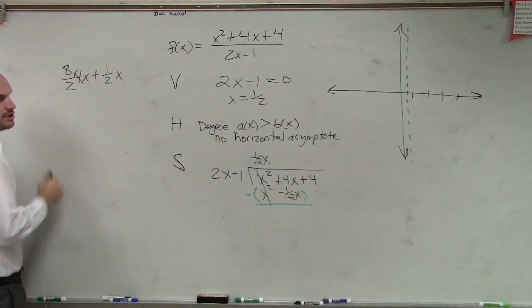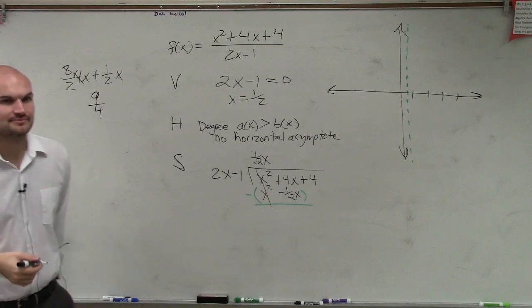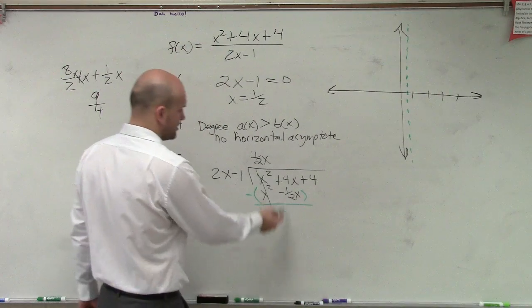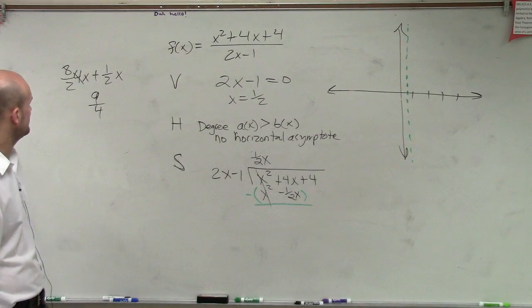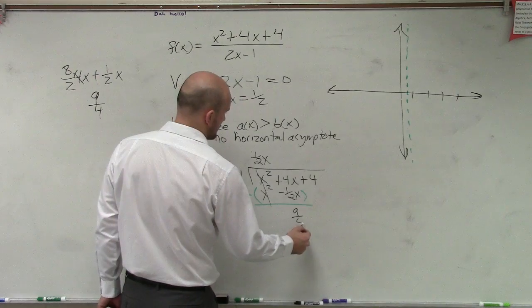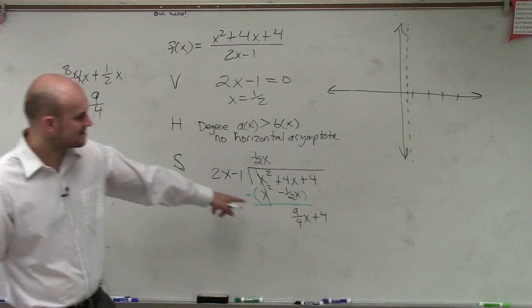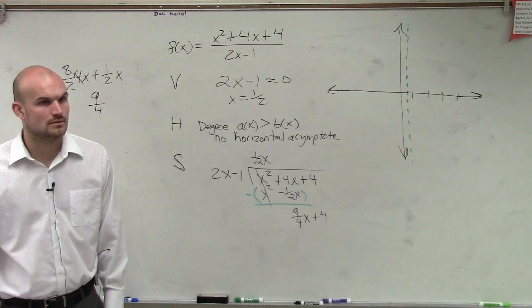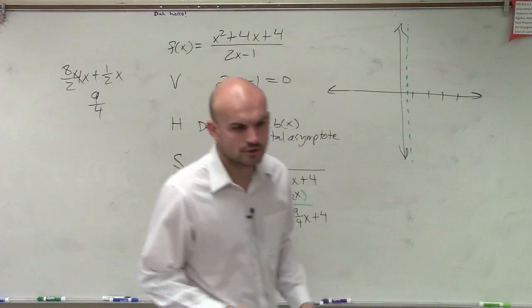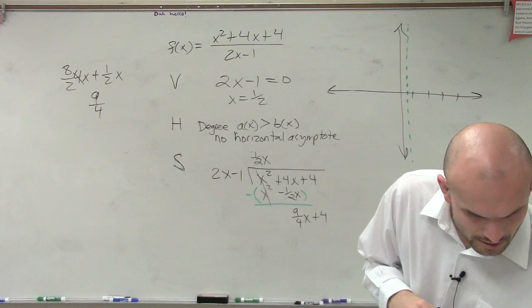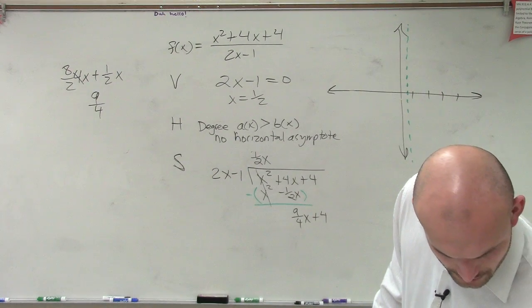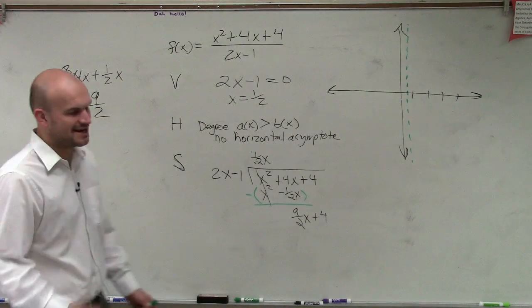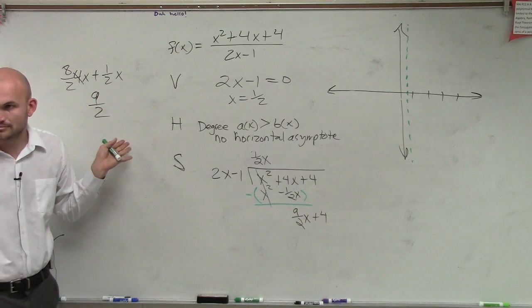So therefore, instead of 4, I need to rewrite this as 8 over 2. So this is really 9 halves x. So therefore, 4x plus 1 half is going to be 9 over 2 x, and then plus 4. It's 9 halves. It's 9 over 2. Correct?